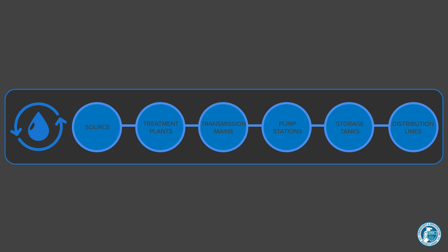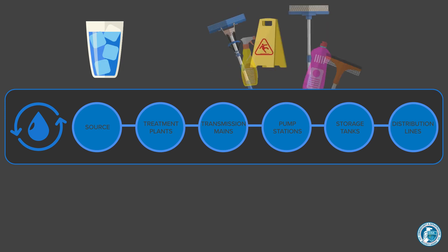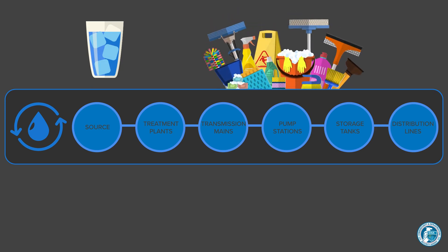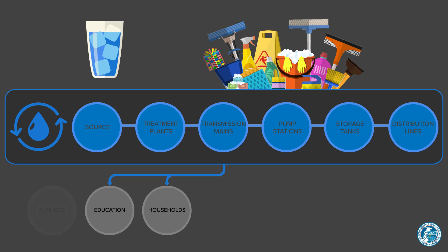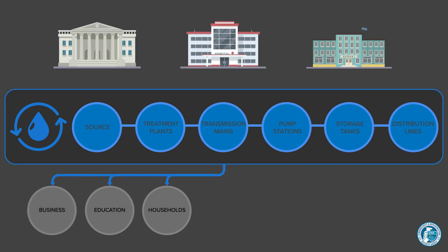As a basic need, drinking water is used for consumption, cleaning, and sanitation within homes, schools, and businesses. On a larger scale, almost all critical infrastructure sectors are reliant on water to effectively function.